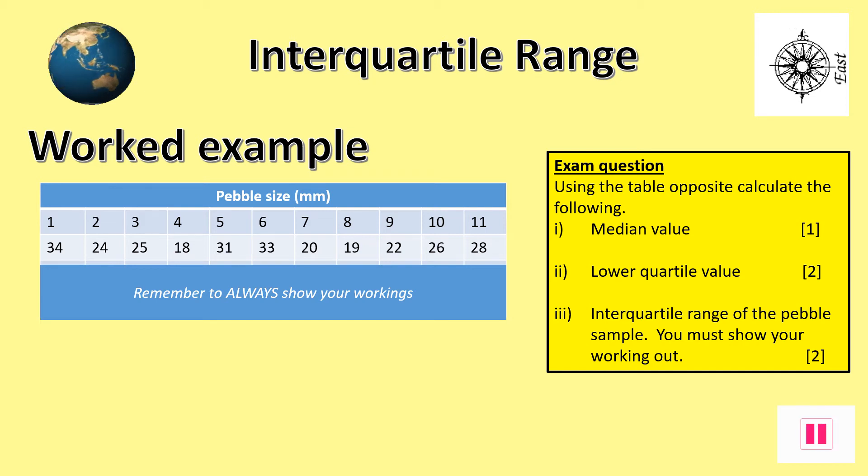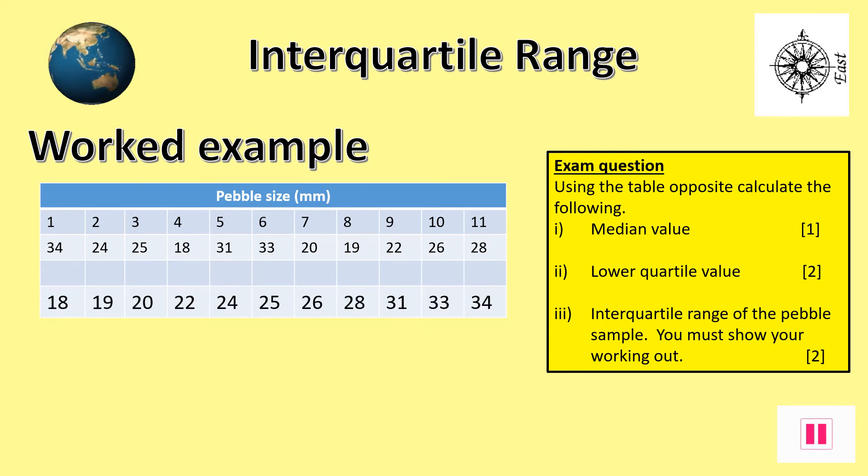Your first task is to carefully rank order the pebbles from the smallest to largest in a row. Once the pebbles are in rank order we are able to first calculate the median value for this set of results. Remember, move your fingers inwards along the data very carefully. In this case the median value is 25 mm.